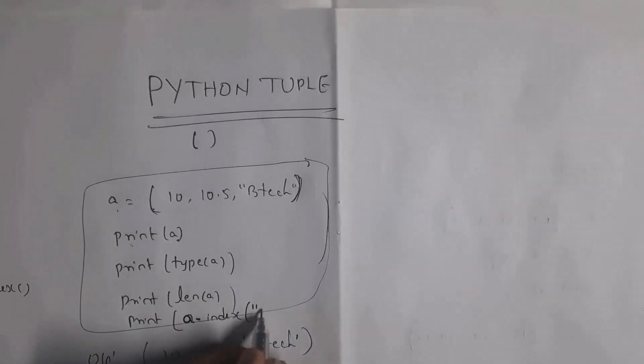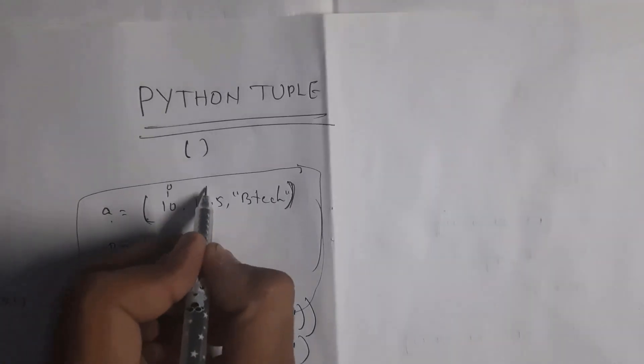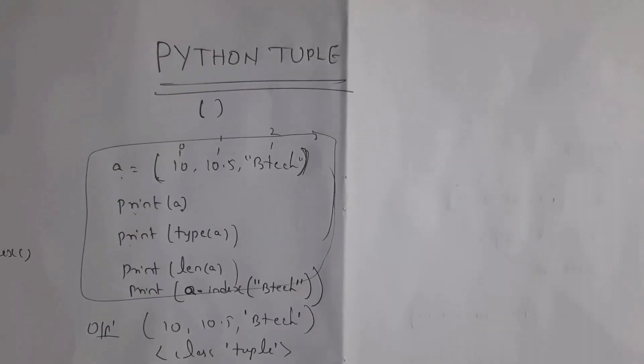This 10 is present in index number 0, 10.5 index number 1, and btec in index number 2. Btec is present in index number 2, so 2 is my output.